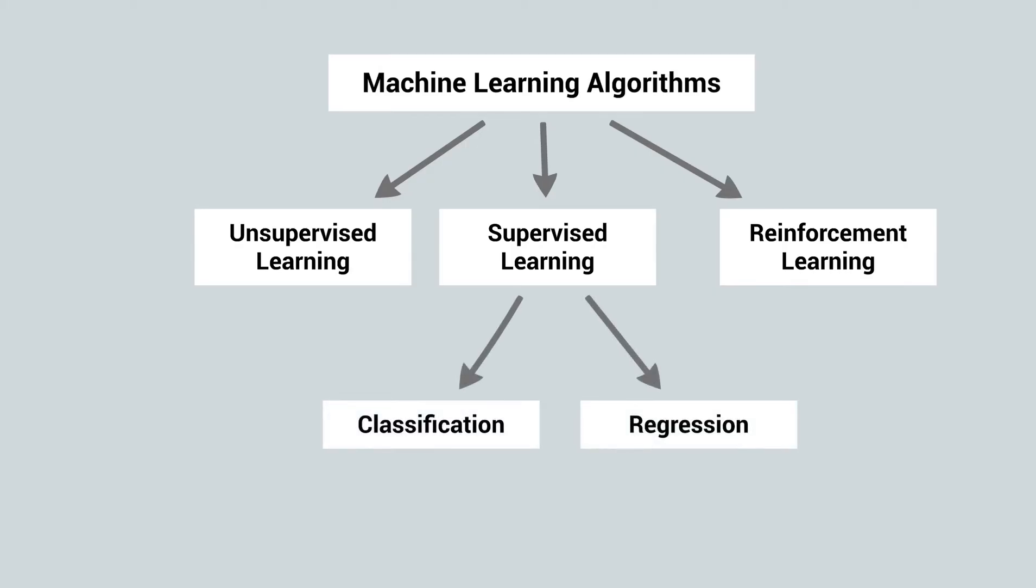Supervised learning can be further categorized into classification and regression algorithms. Classification model identifies which category an object belongs to whereas regression model predicts a continuous output. Sometimes there is an ambiguous line between classification and regression algorithms. Many algorithms can be used for both, and classification is just a regression model with a threshold applied. When the number is higher than the threshold it is classified as true, while lower classified as false.